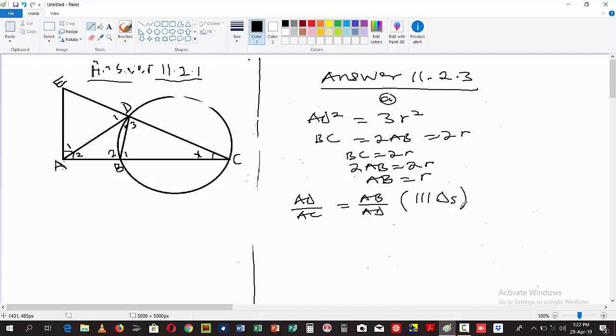We have AD² equal to AC multiplied by AB. Now we don't know AC. By cross multiplication, AD multiplied by AD will be AD², and AC multiplied by AB. We don't know AC.